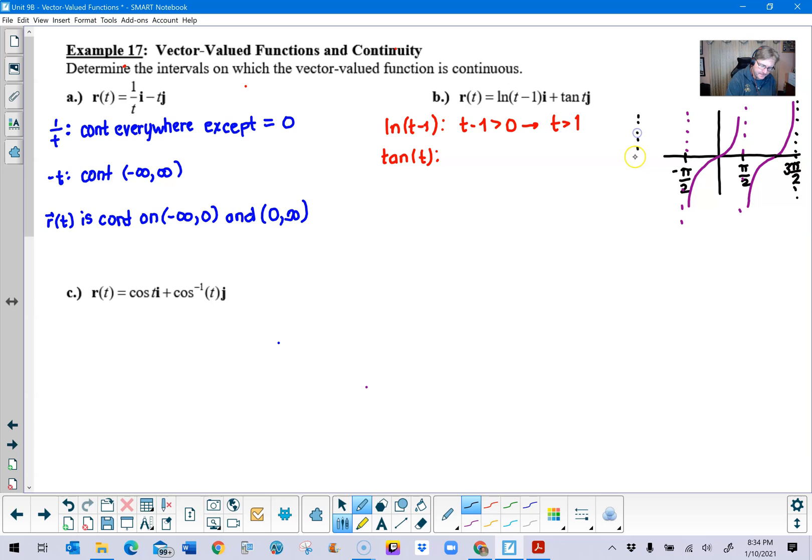So the other one would be over here at negative three pi over two if I draw one last little cycle in. So there's a variety of ways that you can state this.